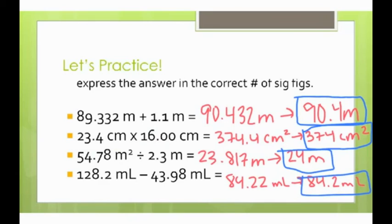For the second one, we are multiplying, and so it's lowest number of significant figures. This number has three, this has four, and therefore we are going to take our answer and have it expressed in three significant figures, making it 374 centimeters squared. Since we're multiplying centimeter times a centimeter, the new units are centimeters squared.